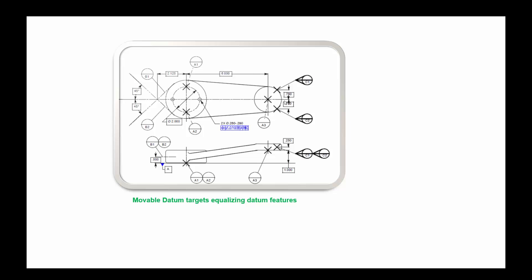Datum targets you all know, but here I'm talking about movable datum targets. Sometimes if a particular point is relative, you can define it as movable. This point could be any three points over the periphery — it could be movable. Wherever you specify this movable datum symbol, it designates equalizing datum features, and those are referred to as MDT — movable datum targets.